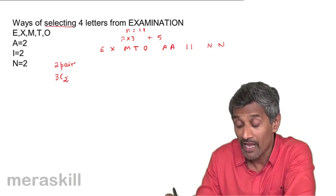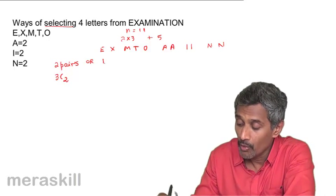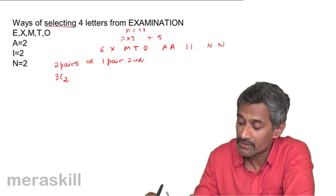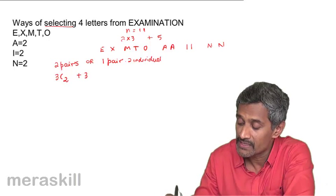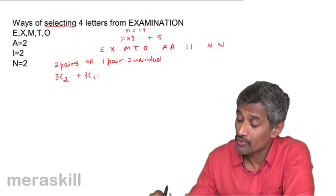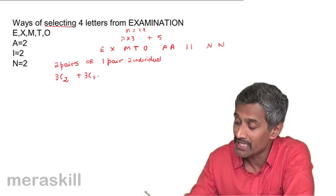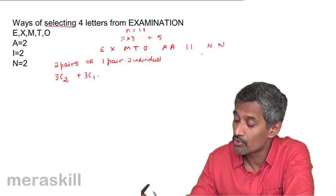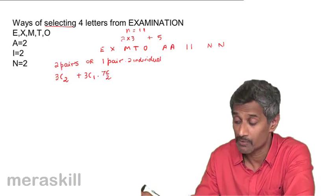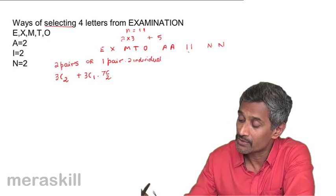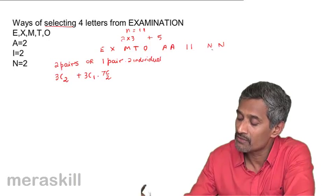It could also be one pair and two individuals. You choose one of the three pairs in 3C1 ways. Since one pair is chosen, two letters are already covered. The remaining two letters are chosen as individuals from the 5 singles (E, X, M, T, O) plus one from each of the two remaining pairs — giving 5 + 2 = 7 choices, so 7C2.